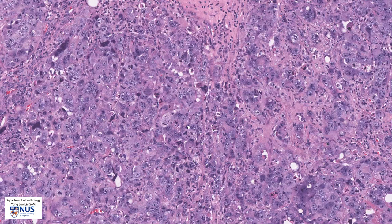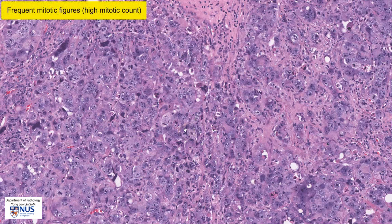In this field, we can see plentiful mitotic figures. For example, there's one here, there's one here right beside it, another one here, here, and here again. There are numerous mitotic figures in this tumour, and this is a sign that this is likely to be a high-grade tumour.